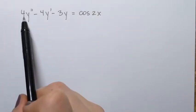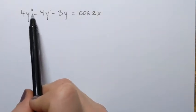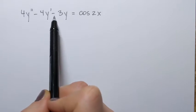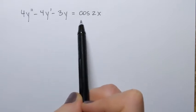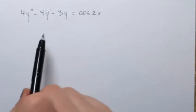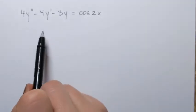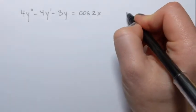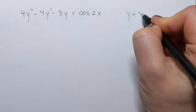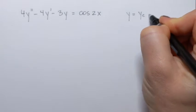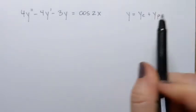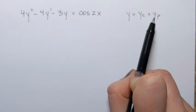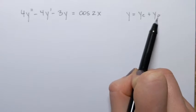We're going to solve the equation 4y'' minus 4y' minus 3y equals cosine of 2x. This is a non-homogeneous linear differential equation. Its general solution has the form y equals yc plus yp — the sum of the complementary function and a particular solution.